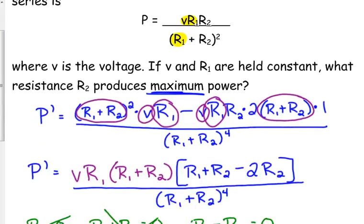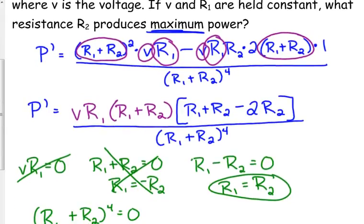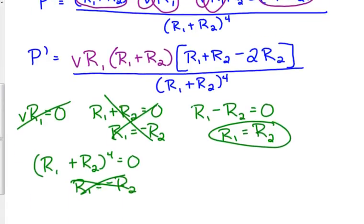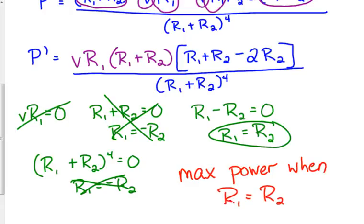And we're not given an interval, so we don't have anything to check. So our critical number would have to be the answer to the question. So max power when R sub 1 is equal to R sub 2.